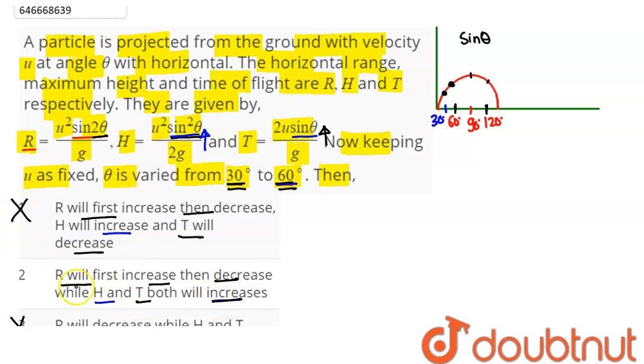Here T also increases. So we have the correct option as option number 2, that is R will first increase then decrease, and H and T both increase. Hence option 2 is the correct answer, so we have 2 as our answer.